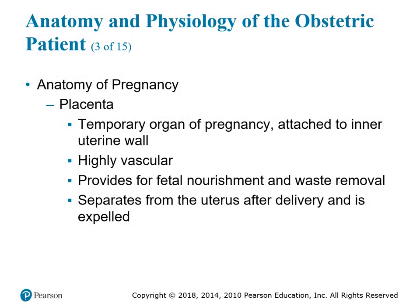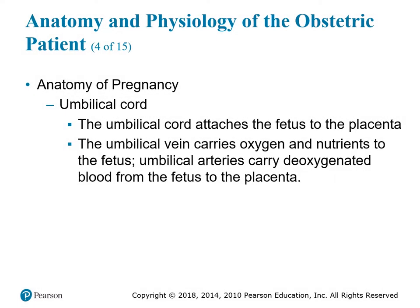The placenta is a temporary organ of pregnancy attached to the inner uterine wall. It's very highly vascular, provides fetal nourishment and waste removal, and separates from the uterus after delivery and is expelled. The umbilical cord attaches the fetus to the placenta. The umbilical vein carries oxygen and nutrients to the fetus from the mother, and the umbilical cord arteries carry deoxygenated blood from the fetus to the placenta.